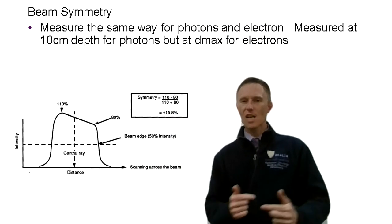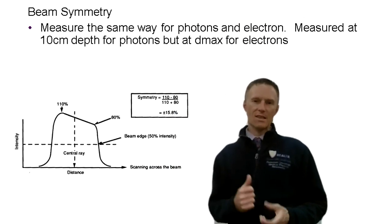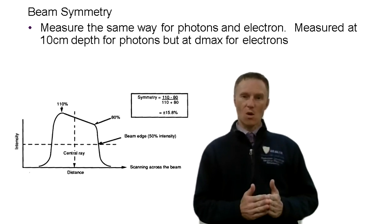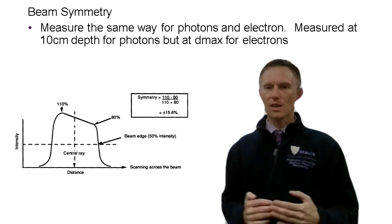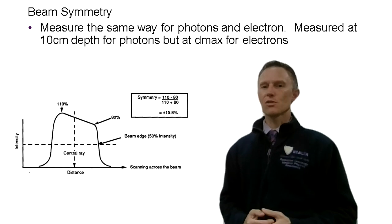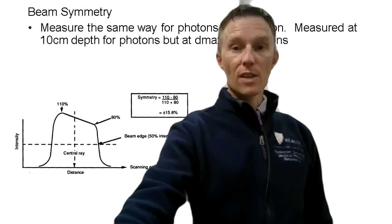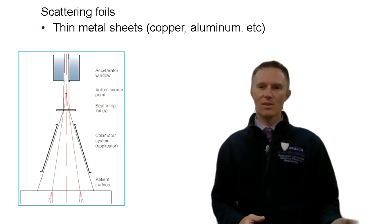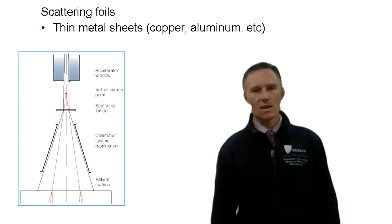With TG-142, it doesn't matter what the original flatness was — just make sure it's the same now, within one percent of baseline. The same applies to symmetry. The bending magnet in the gun-target direction controls the beam going from head to foot of the patient and can be controlled to restore symmetry. Beams can be designed to be not flat, but they should always be symmetric. Flatness and symmetry are both measured at 10 cm depth as per AAPM standards.